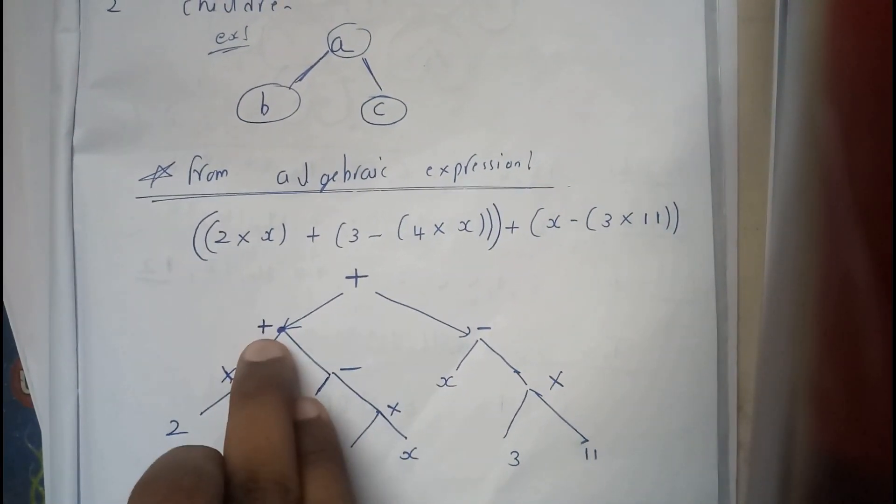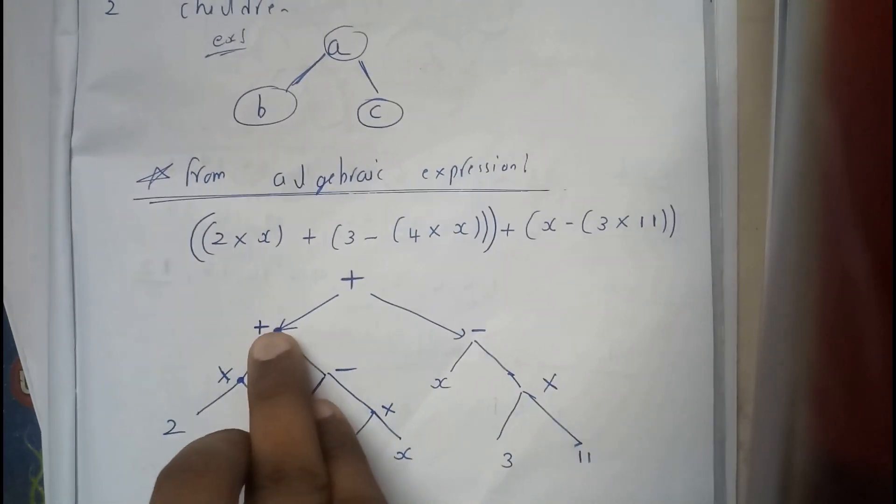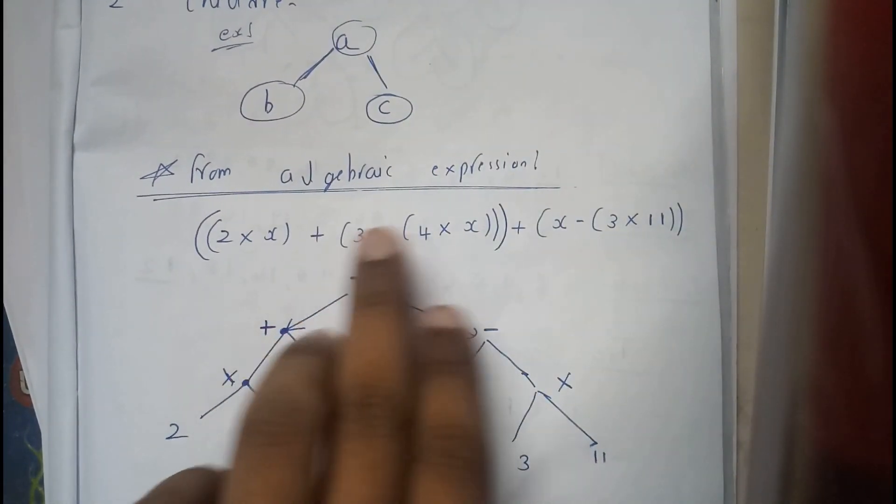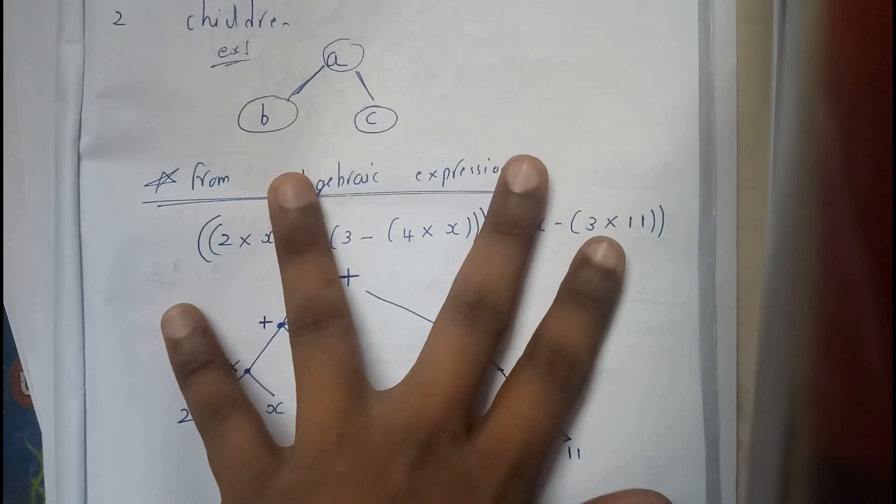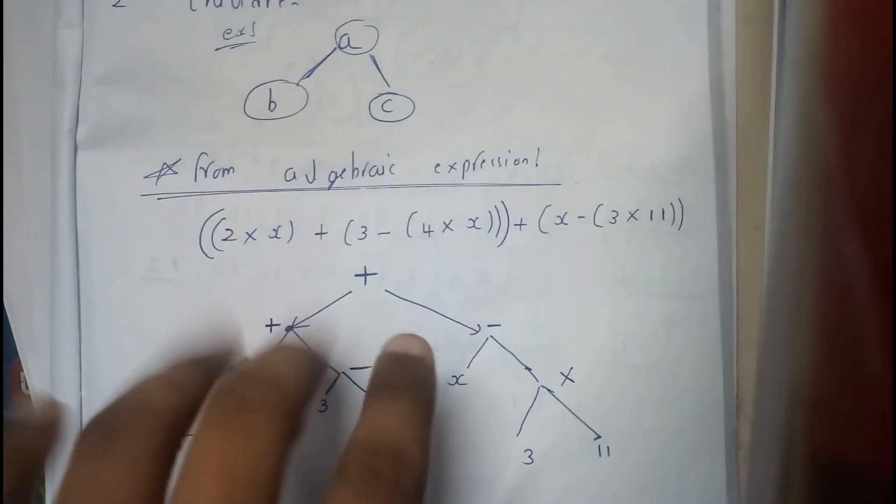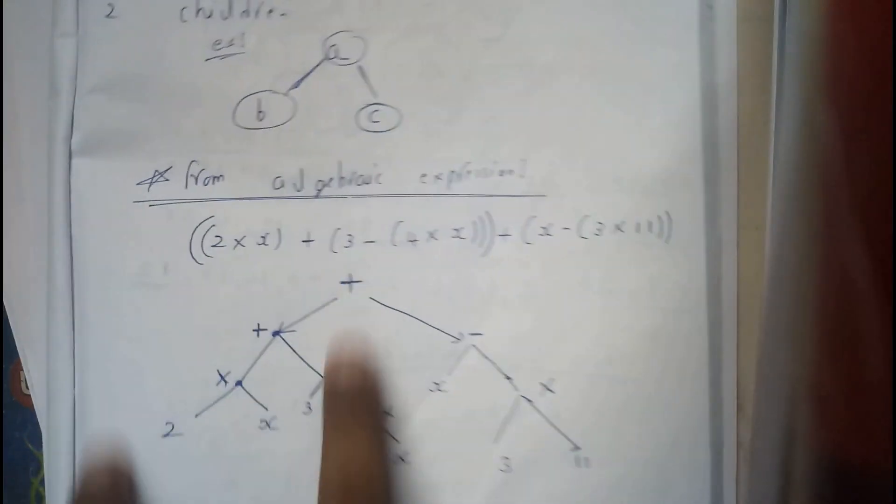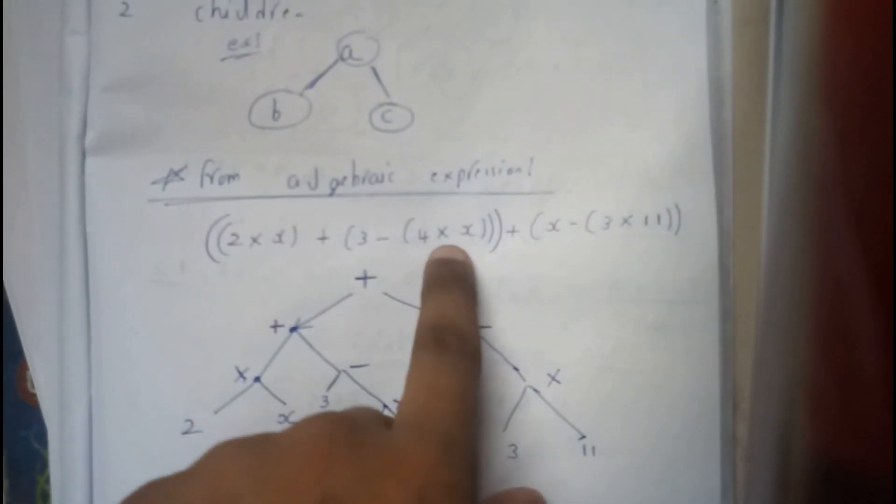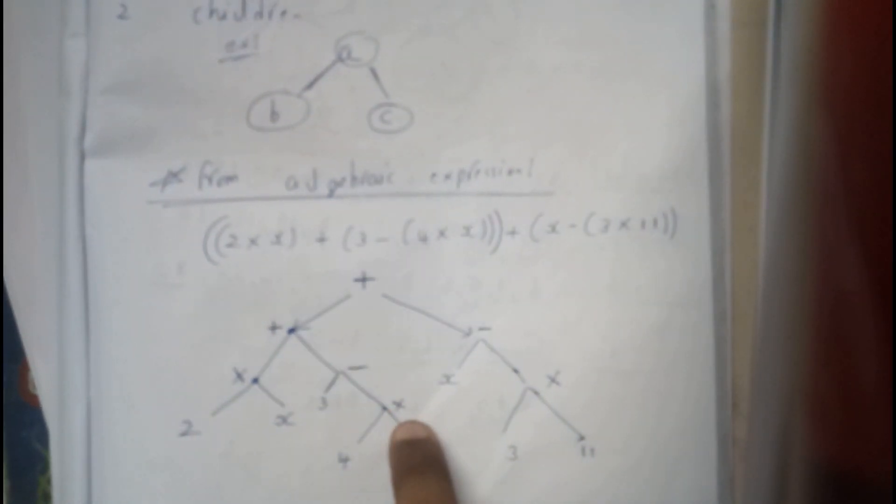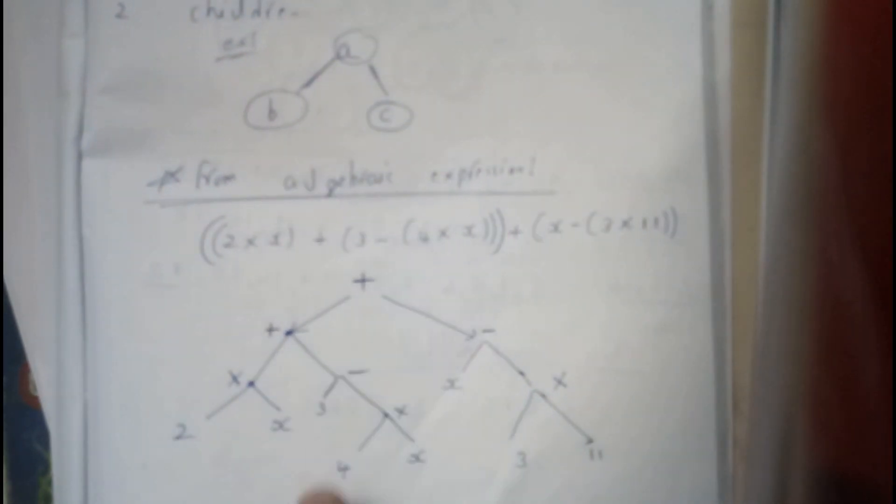Done with the positive left part, let's come to the positive right part. Again the separator is minus. Minus on the left. Multiplication will be the separator, 4 on the left, X on the right.